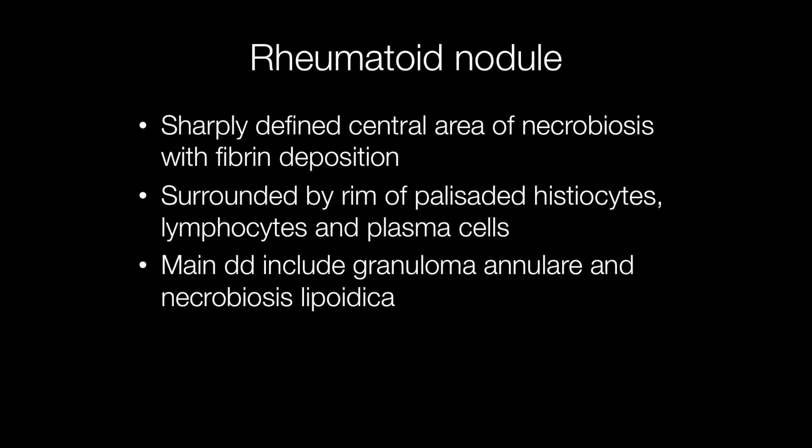Histologically, rheumatoid nodules have a sharply defined central area of necrosis with fibrin deposition, and the necrotic area is surrounded by a rim of typically palisaded histiocytes with lymphocytes and plasma cells.